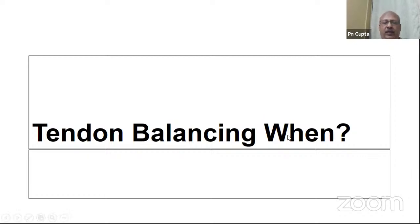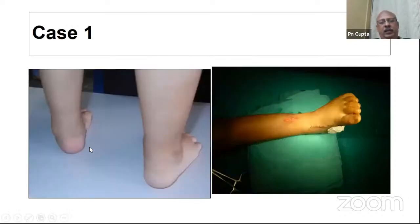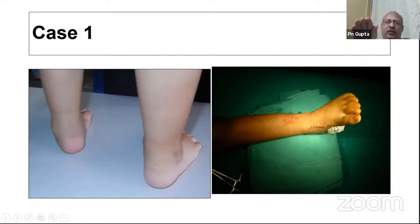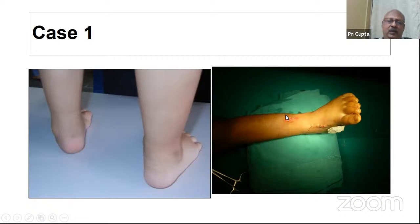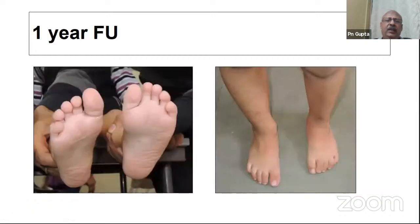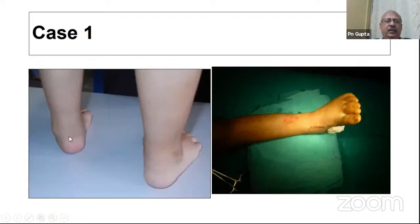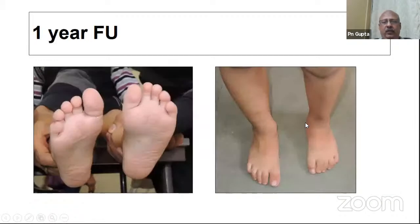Regarding tendon balancing, this is indicated when there is dynamic forefoot supination — every time the child walks the foot inverts. You can perform a full tendon transfer or a split tendon transfer of the tibialis anterior. This is basically a tendon balancing surgery. Here is the same patient with dynamic supination or dynamic inversion after one year of follow-up.